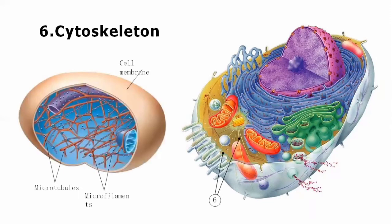The other organelle is cytoskeleton. Cytoskeleton is composed of microtubules and microfilaments. The cytoskeleton provides shape and strength to the cells, and it is involved in the interaction of the cells with the external environment and with other cells.